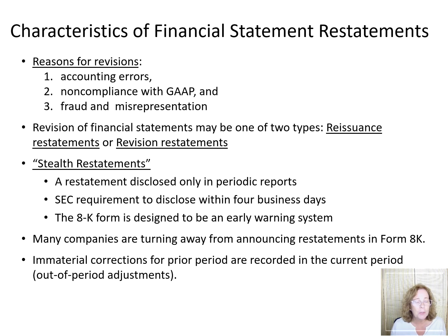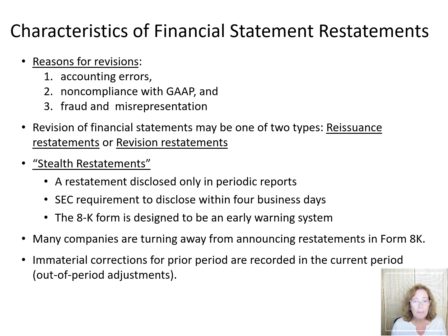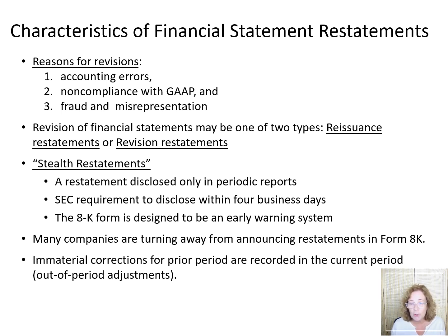Immaterial corrections for prior periods are recorded in the current period as an out-of-period adjustment. The top five most common out-of-period adjustments in 2019 were taxes, revenue recognition, expense recording, inventory value of PPE intangibles or fixed assets.